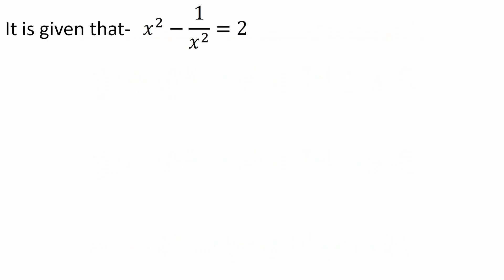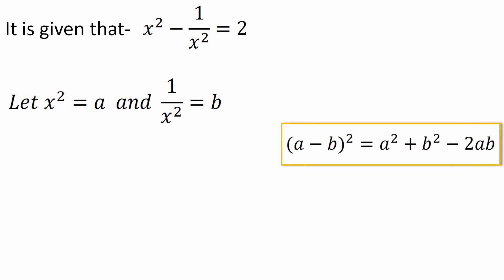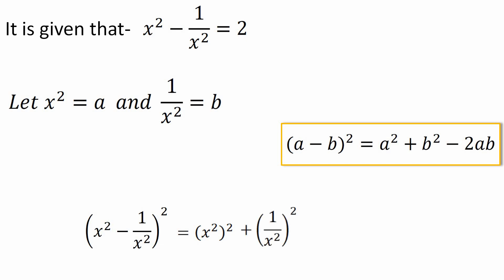In the question it is given that x² - 1/x² = 2. Let us assume x² = a and 1/x² = b, so we are given with a - b. We will use the second identity: (a-b)² = a² + b² - 2ab. Putting in the values, we get (x² - 1/x²)² = (x²)² + (1/x²)² - 2·x²·(1/x²).